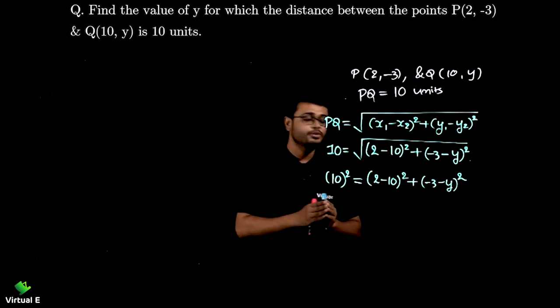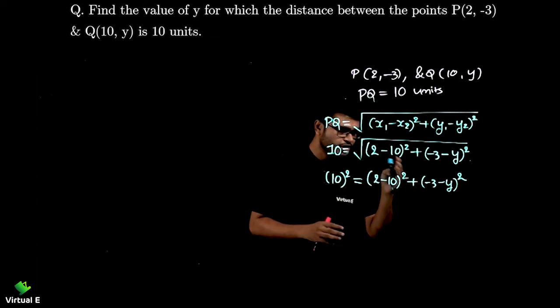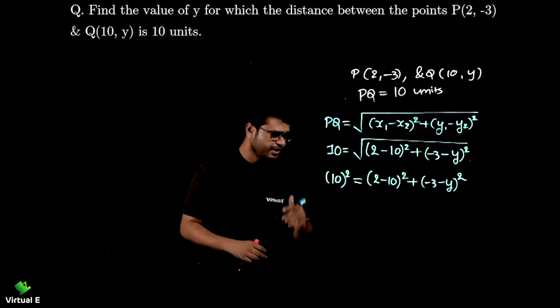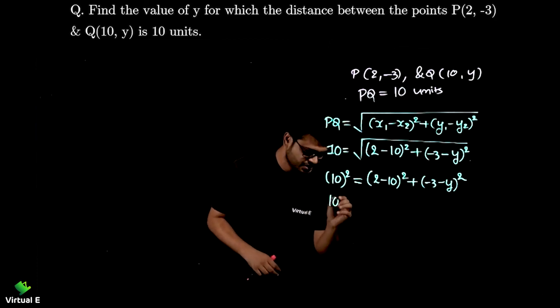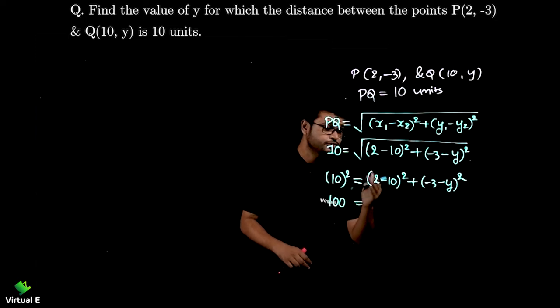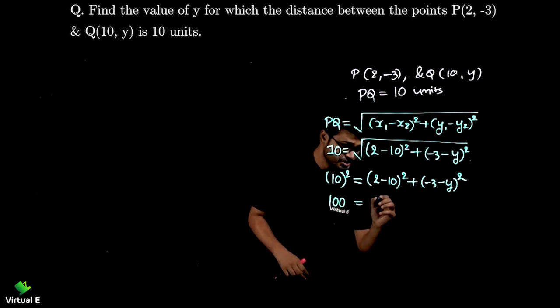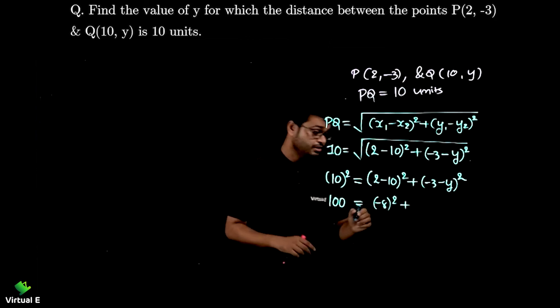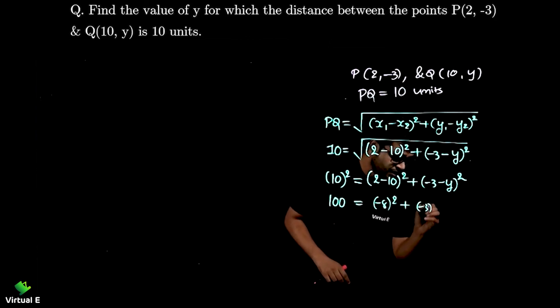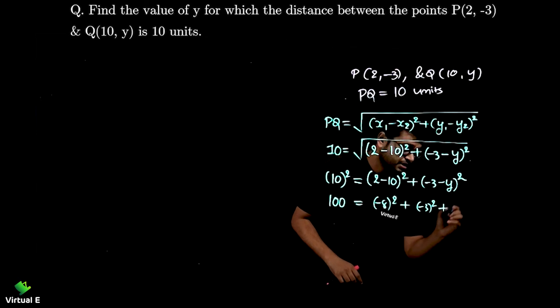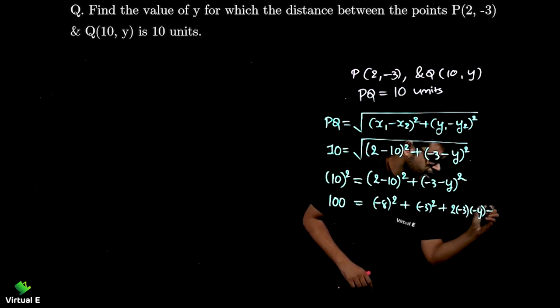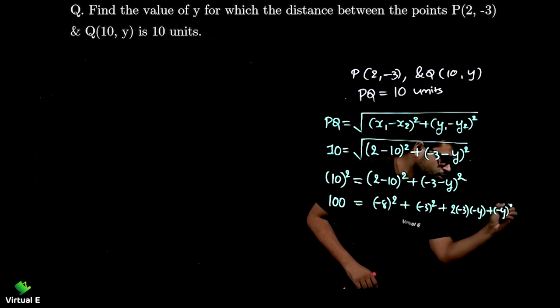Now we are going to use the identity (a - b)² and here also (a - b)². Let's simplify now. So 10² is 100 is equal to 2 - 10 which is -8 whole square plus here be careful -3² plus here 2 into -3 into -y plus (-y)².